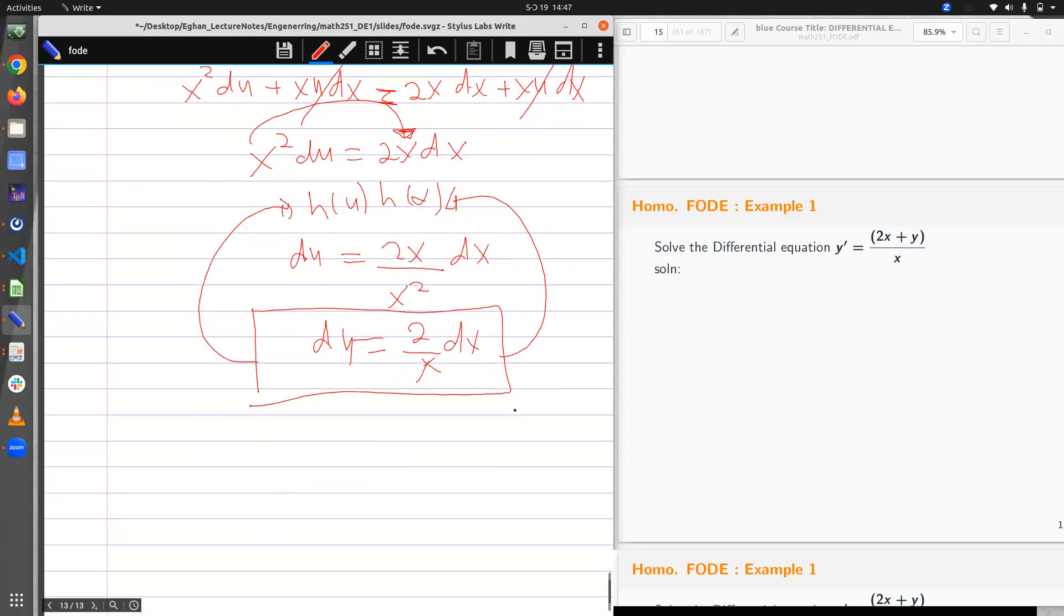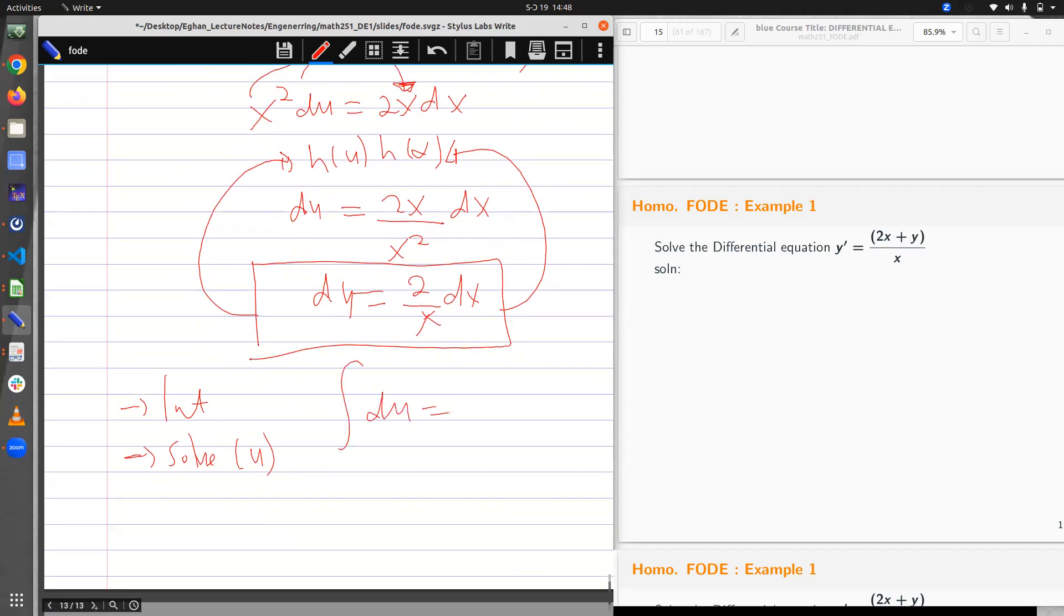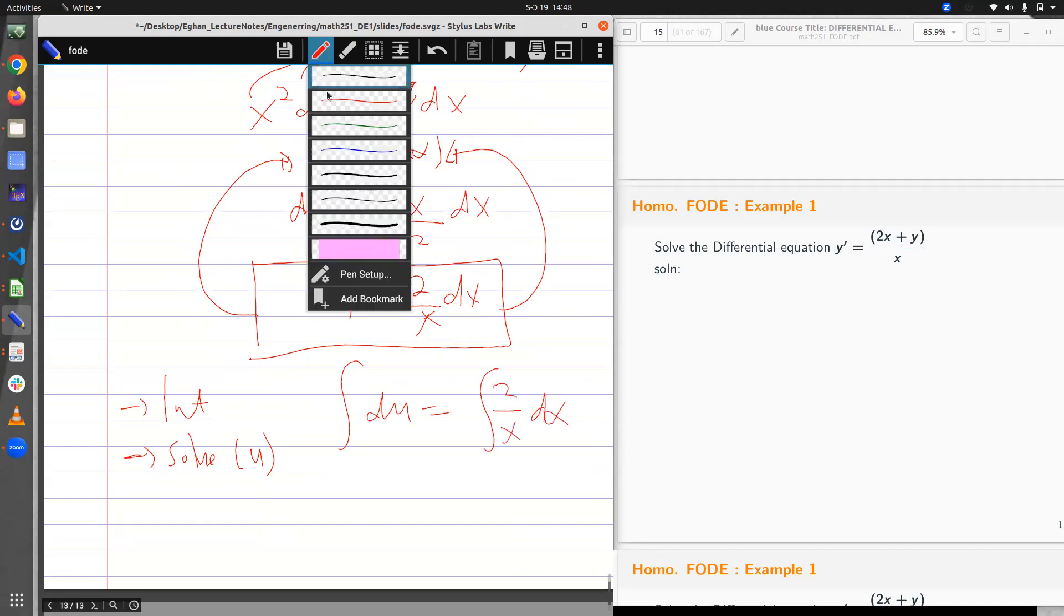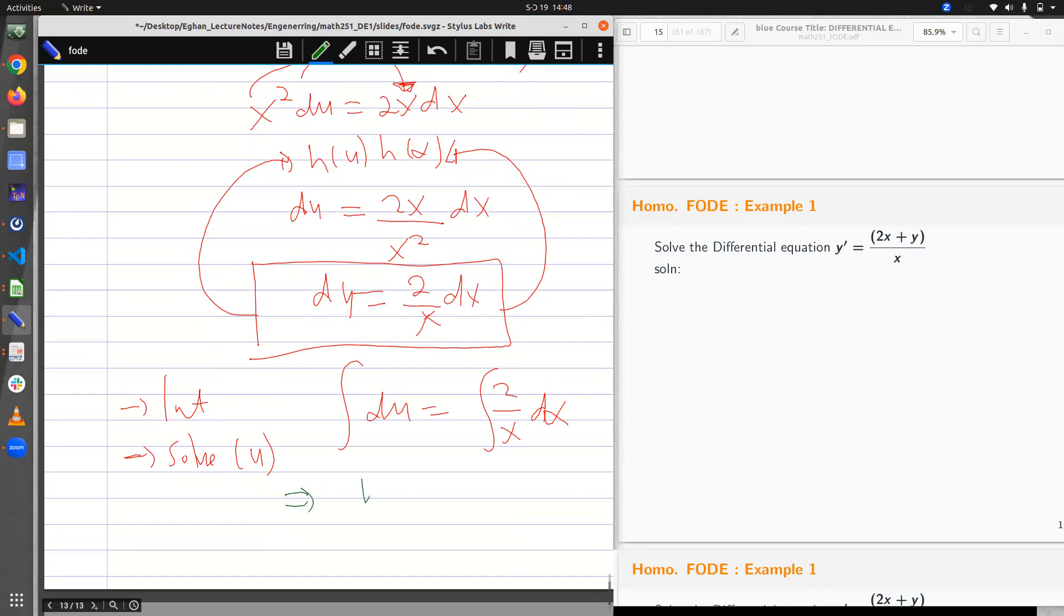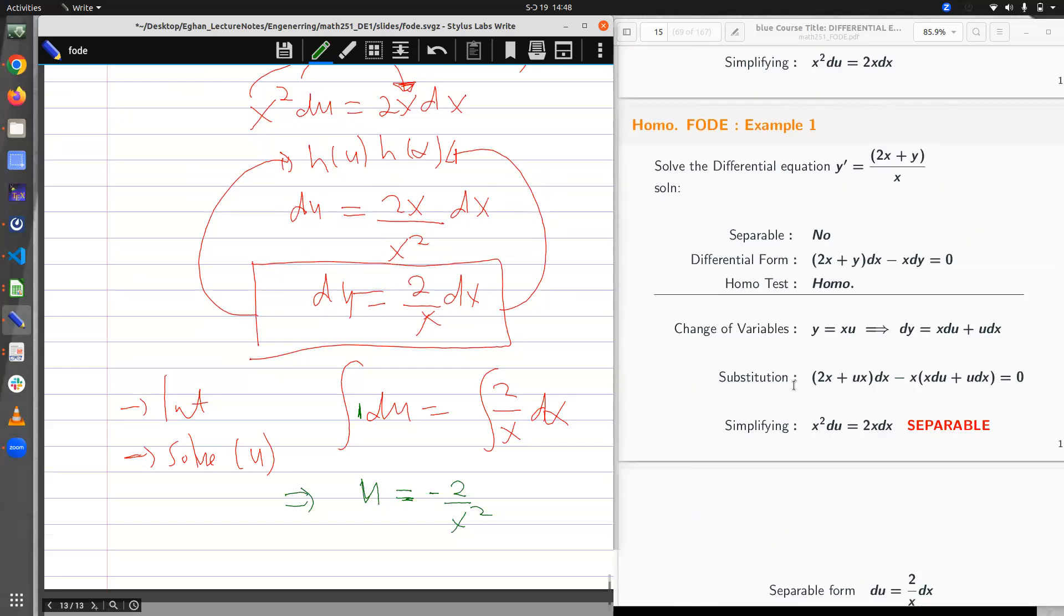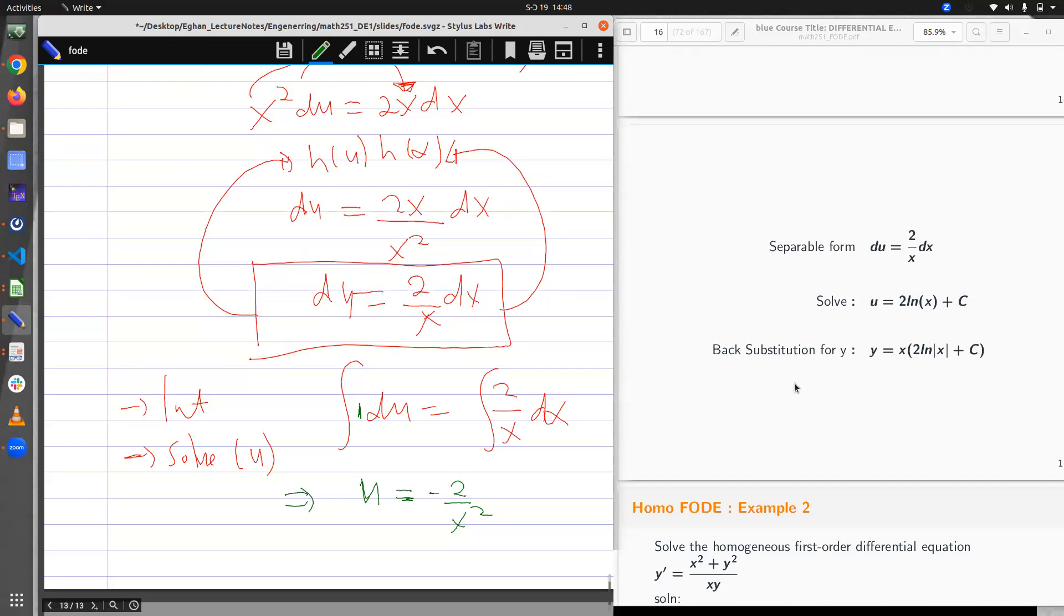And at this point this is separable because I have u only and I have the x terms only. You know what to do from here. You have to integrate and then solve for the unknown. The unknown here is u. Let me do the integration. I have integral du is equal to integral 2 over x dx. If I integrate with respect to u I have u, is equal to - I'm integrating with respect to x. If I integrate 1 over x dx the answer is ln x. So it means you have 2 ln x plus the constant of integration.